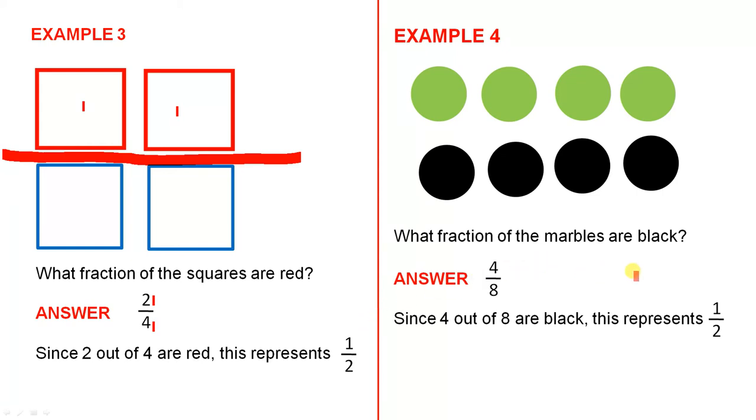Example 4. What fraction of the marbles are black? The answer: there are 4 black marbles—1, 2, 3, 4. There are 8 altogether, so the answer is 4 over 8.